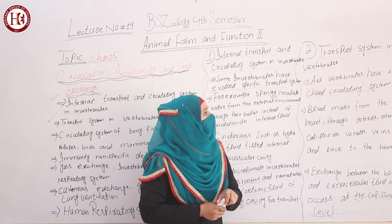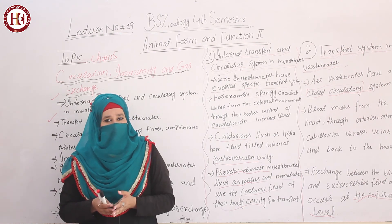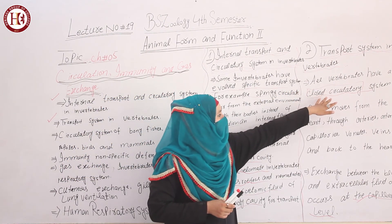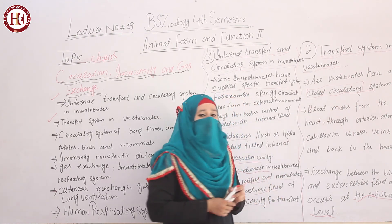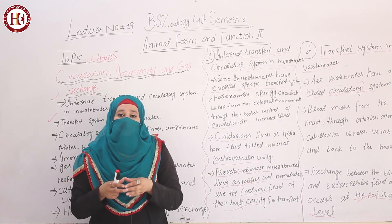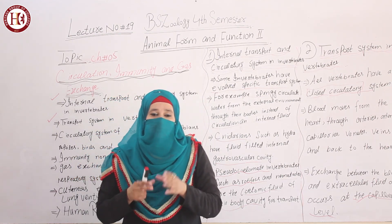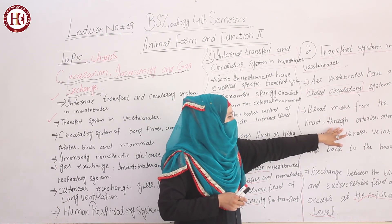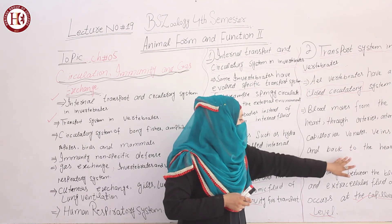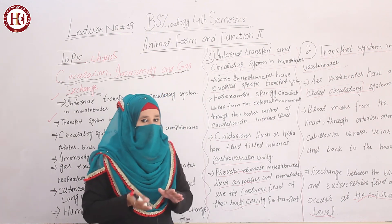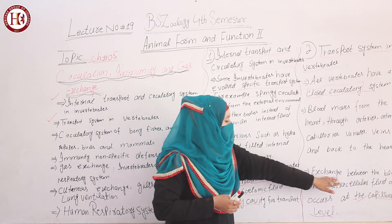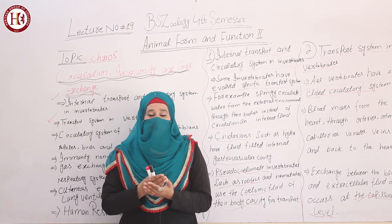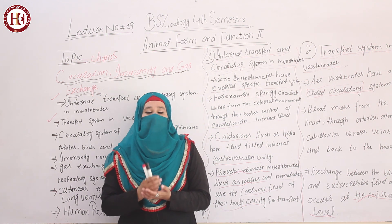Transport system in vertebrates: vertebrates are living organisms having a vertebral column, and their circulatory system differs from invertebrates. All vertebrates have a closed circulatory system with blood vessels. All transport of materials and blood circulation takes place within blood vessels. Blood moves from the heart through arteries, arterioles, capillaries, veins, and venules, and back to the heart — deoxygenated blood returns for oxygenation. Gaseous exchange and transport of minerals, ions and gases take place within the capillaries.